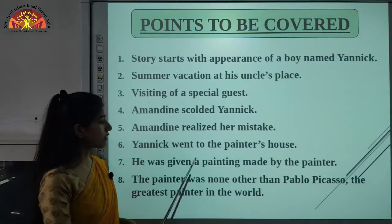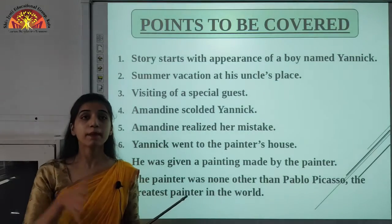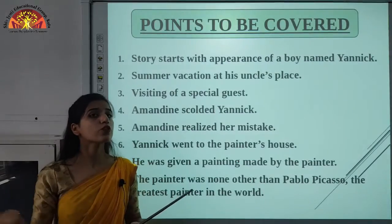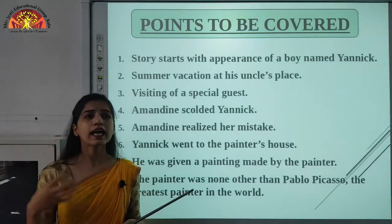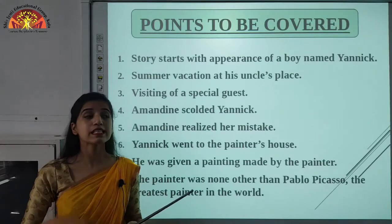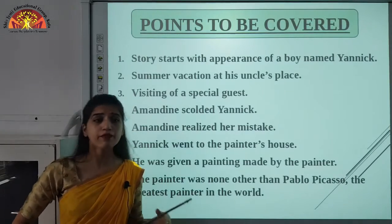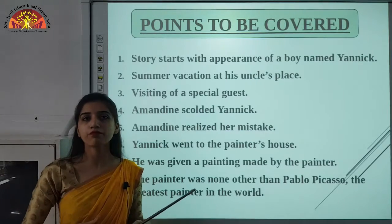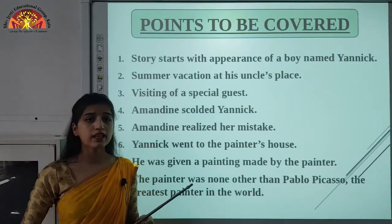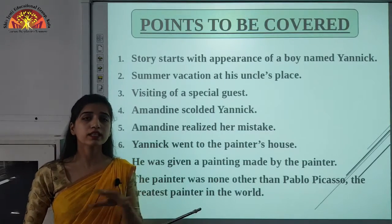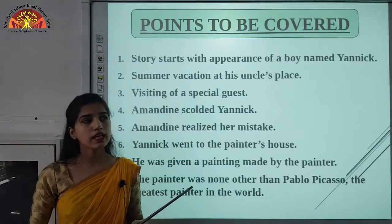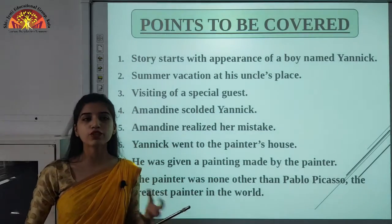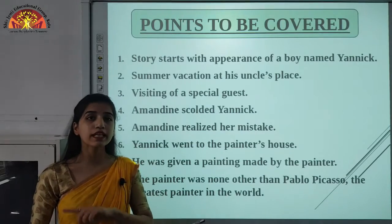Seventh point: Yannick was given a painting made by the painter. The painter made a painting of sailing boats for him because when he asked Yannick what he liked, Yannick said he liked sailing boats. When Yannick went to his place, he asked him, 'Are you Cezanne, the famous painter?' The painter replied yes, and agreed to make a painting. He made a picture of sailing boats of Paris.